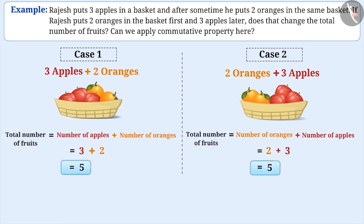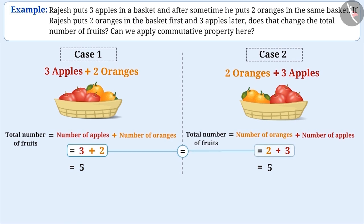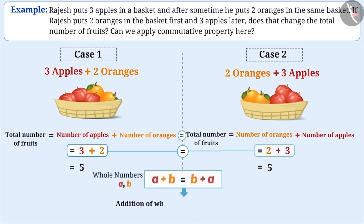In both cases, there will be five fruits in the basket, which states that three plus two equals two plus three. In other words, number of apples plus number of oranges equals number of oranges plus number of apples. This example shows the commutative property of addition of whole numbers.